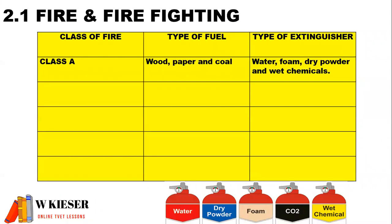There are different classes of fire, and for each class of fire we will use a different type of material to start the fire and a different type of extinguisher to put out the fire. For a class A fire, wood, paper and coal would start the fire, and for the extinguisher we could use water, foam, dry powder, or wet chemicals.